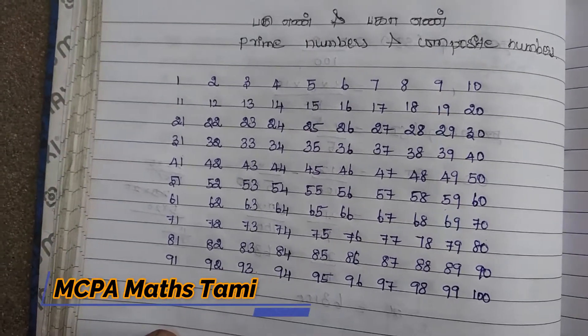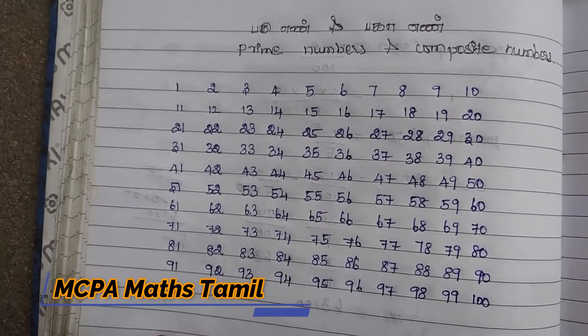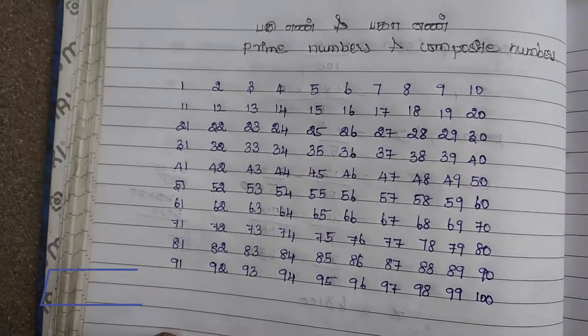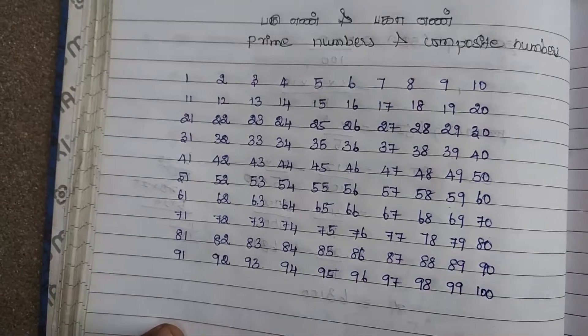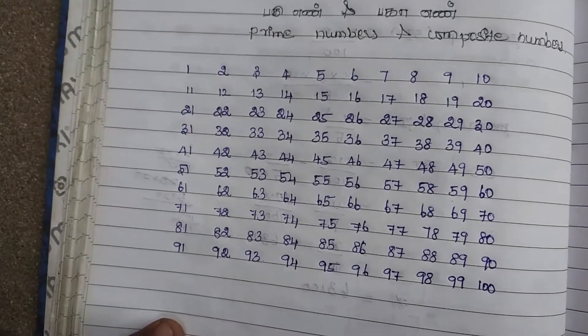Hi friends, this is MCPA Max Tamil. This video is about Pahuyen and Pahayen — that is, Prime Numbers and Composite Numbers.